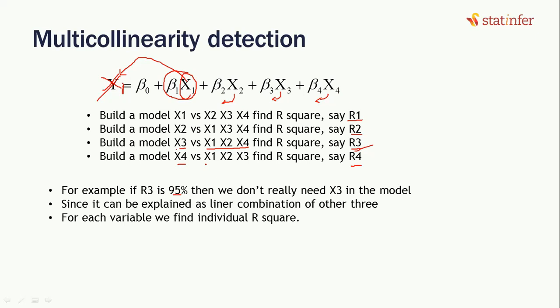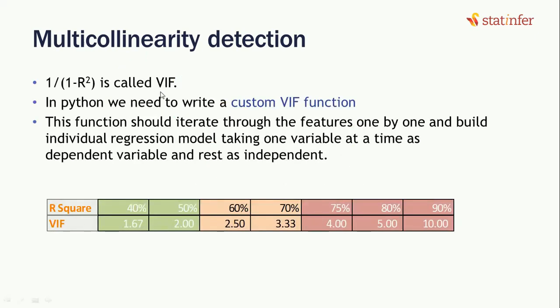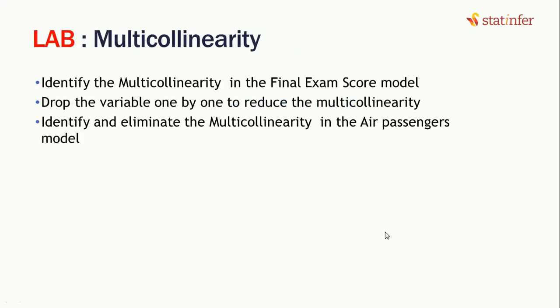However, using R-squared every time is not very intuitive, so we use a different measure called VIF — Variance Inflation Factor. The formula is VIF = 1 / (1 - R²) for that particular variable. Looking at a reference table: if R-squared is 40%, VIF is about 1.67; at 80% R-squared, VIF is 5. The rule of thumb is that if any VIF value is more than 5, we remove that variable because it is highly correlated with the other independent variables.